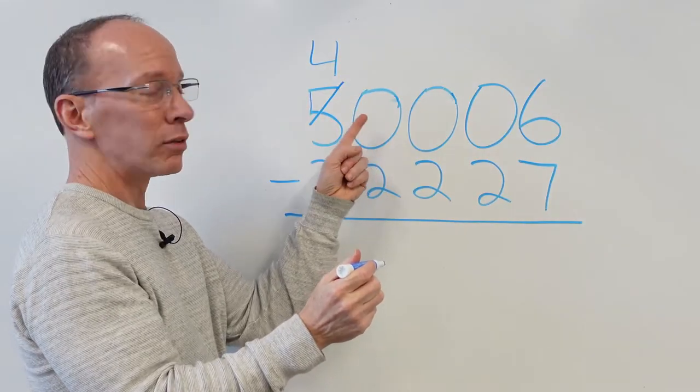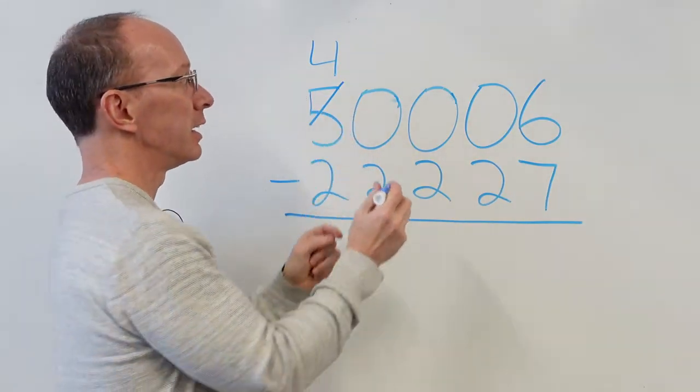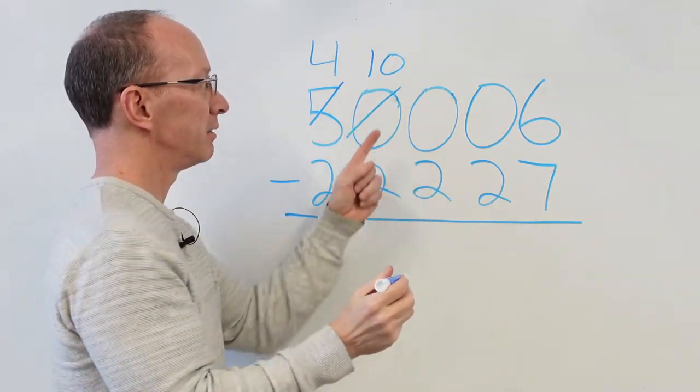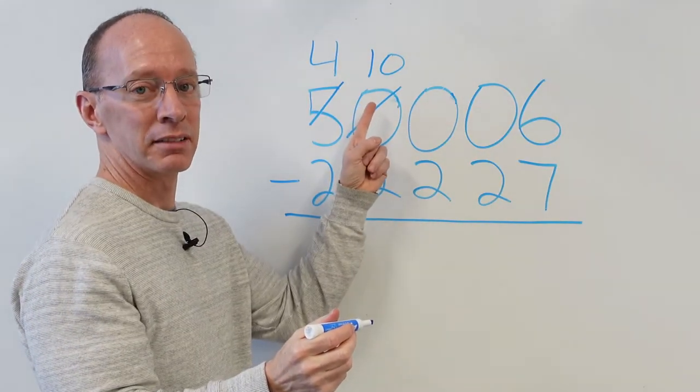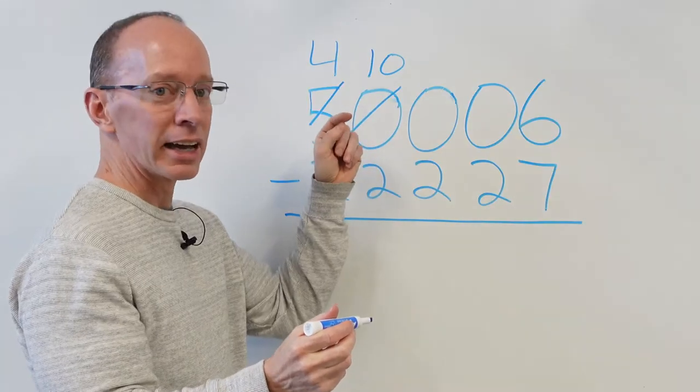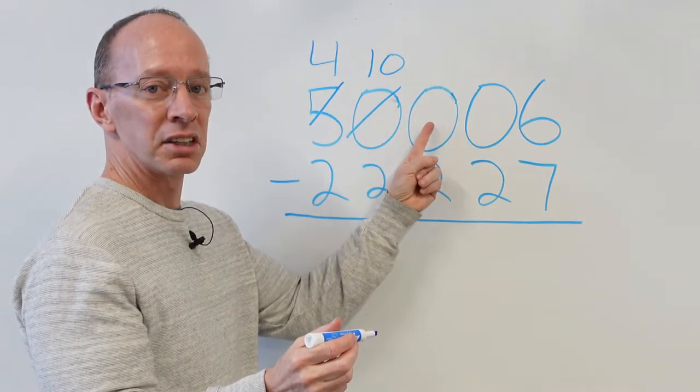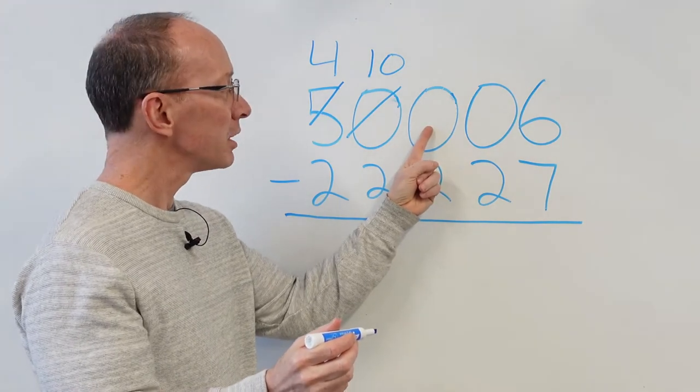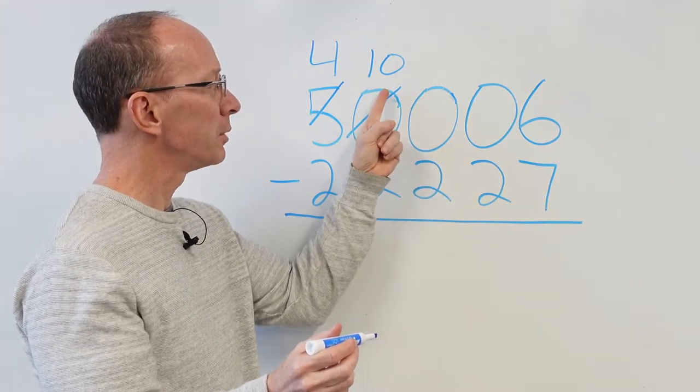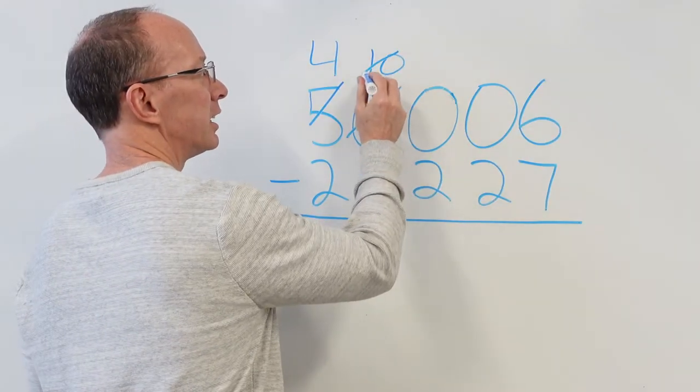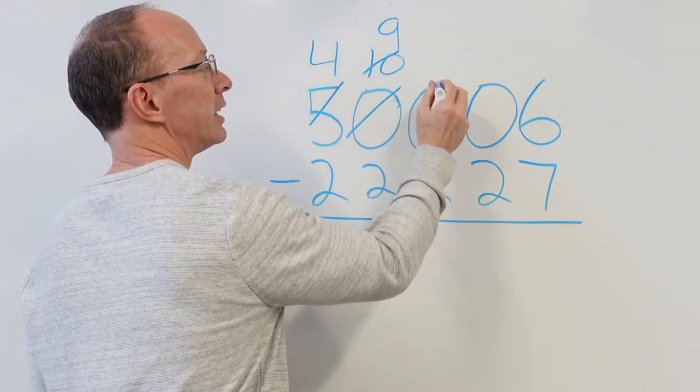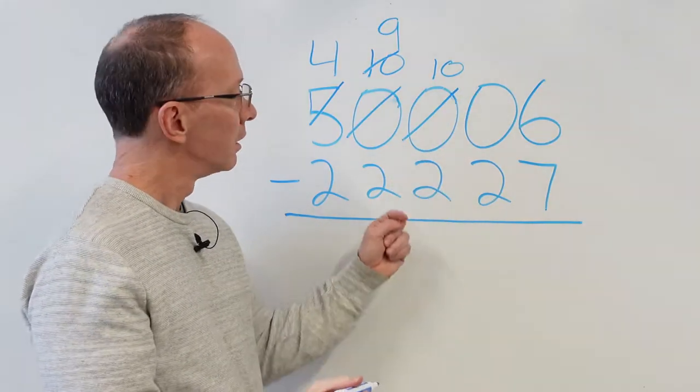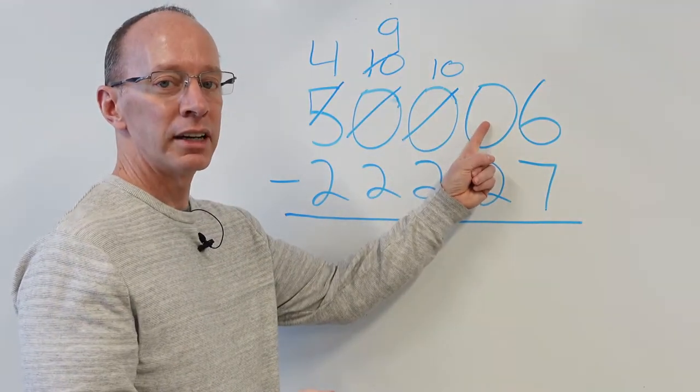Now, this zero, remember, I borrowed the ten from here. So I'm putting the ten right up here. I'm putting a line through there. Now I've got something here. I've got cookies in the cookie jar. This zero right here kind of would like some. I need some, please. So can I borrow one from you? Sure. So I cross out the ten. I make that a nine, and now he's got ten. Put the line through there.